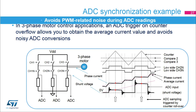The ADC trigger is generated on the counter rollover, allowing the reading to be done precisely in the middle of the period to get the average value of a signal with significant ripple. Using a PWM-synchronized ADC trigger also guarantees that the ADC conversion will be done away from the ringing noise present on the shunt voltages.